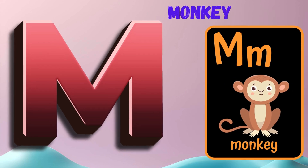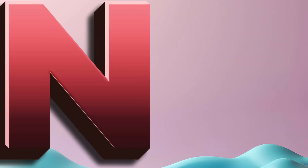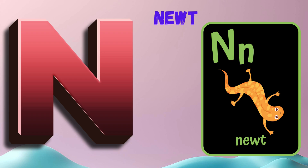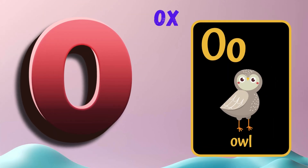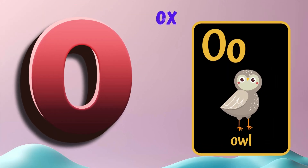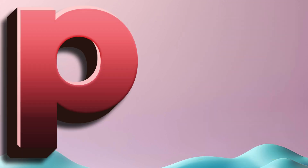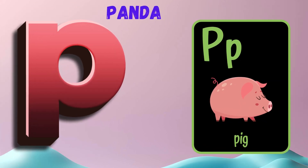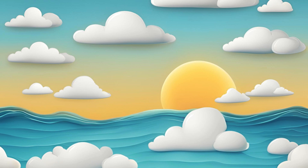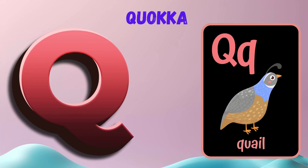M is for Monkey. M, M. Monkey. N is for Newt. N, N. Newt. O is for Ox. O, O. Ox. P is for Panda. P, P. Panda.